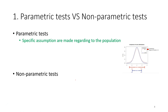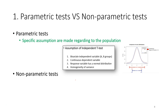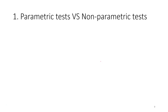Another difference is that parametric tests require specific assumptions about the population — for example, that the data is drawn from a normally distributed population, and when comparing two or more samples, that the sample variances are equal. For non-parametric tests, no such specific assumptions are made. This means we use non-parametric tests when our data is not normally distributed and the variances between samples are not equal.